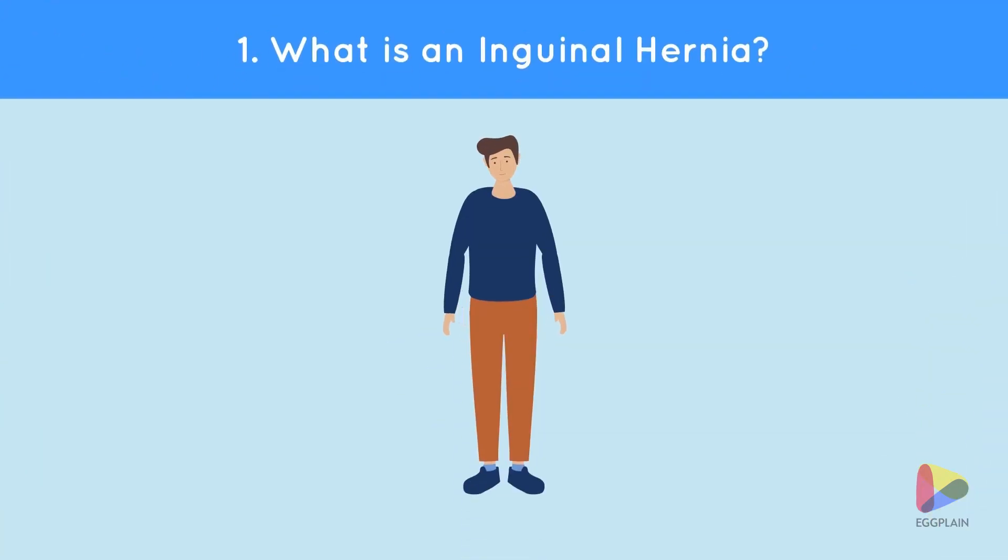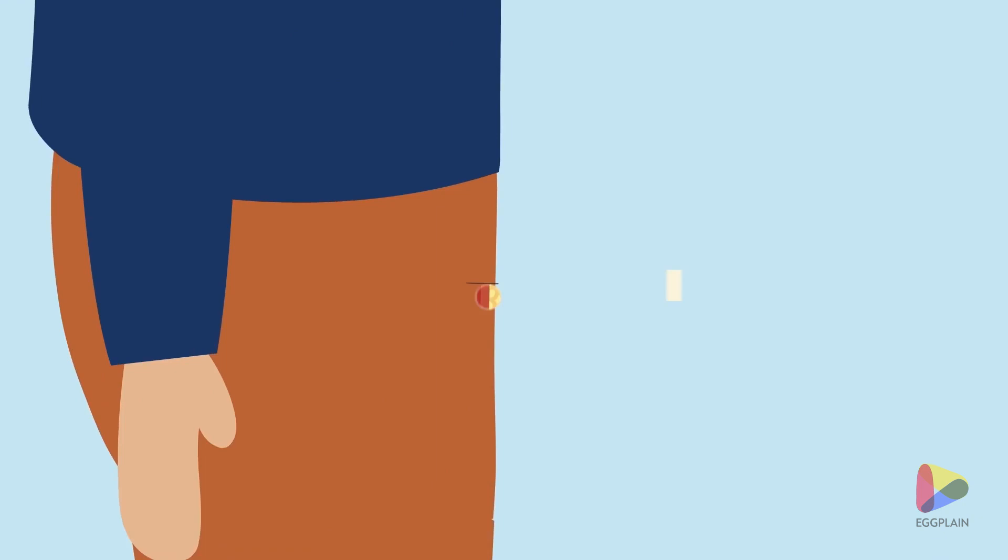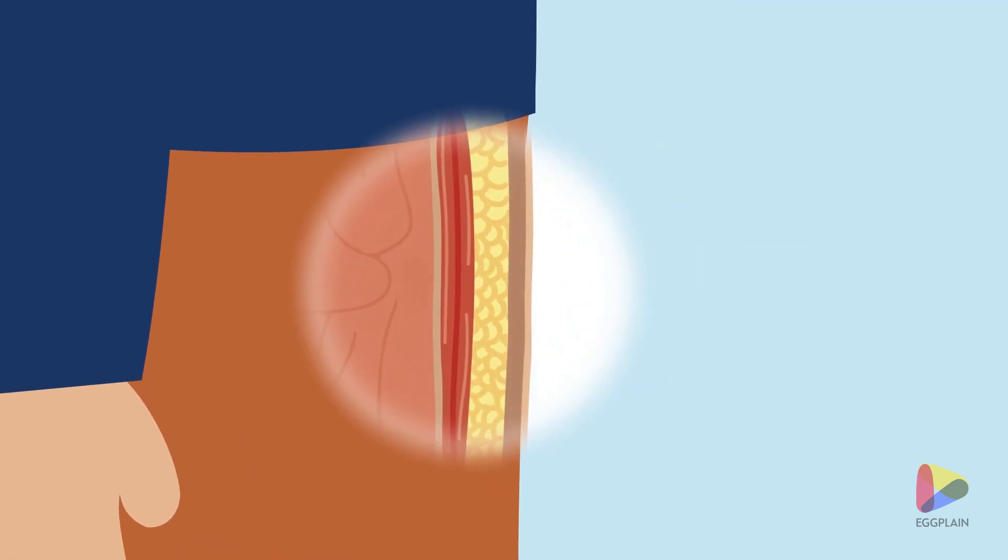The abdominal wall consists of several layers of tissue that protect the intestines. A hernia occurs when there is a weak area in the layers of the abdominal wall through which small parts of the intestines or fat can slip.